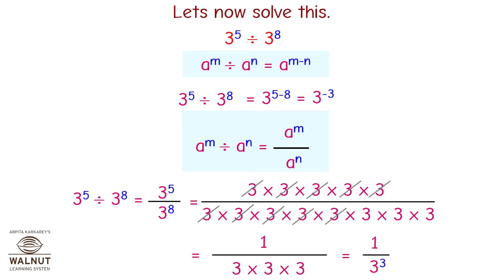You can see that we are doing the division using two different laws and we get two different answers where the LHS is the same. So we can say that 3 raised to minus 3 is equal to 1 upon 3 raised to 3.